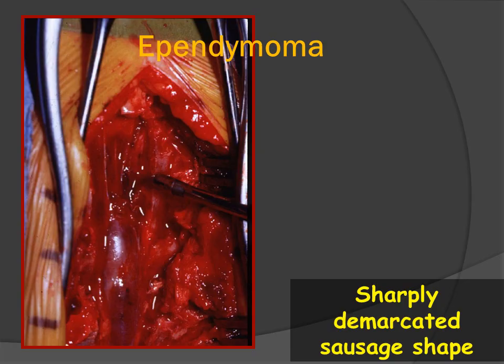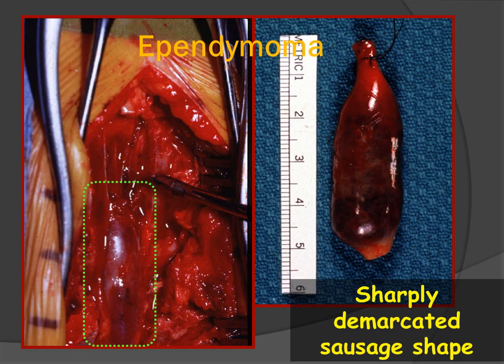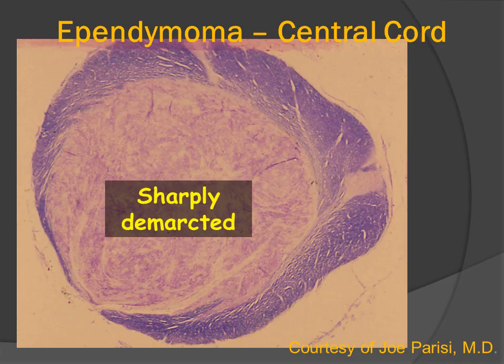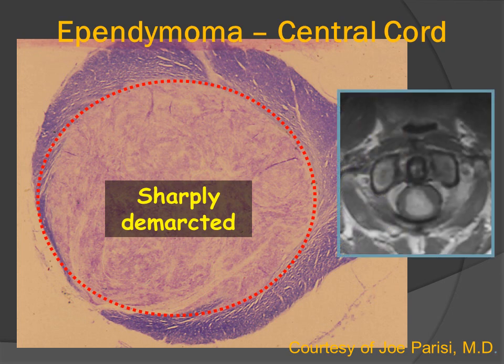At surgery, ependymomas are oftentimes described as sausage-like masses — very, very smooth. We can see in the resected specimen something that really does look just like a sausage, a very well demarcated lesion. In a different patient, this cross-section of the spinal cord shows a sharply demarcated central lesion, similar in appearance to the patient we just reviewed.